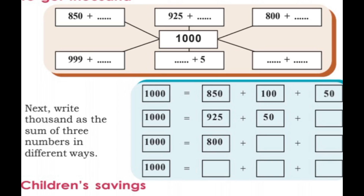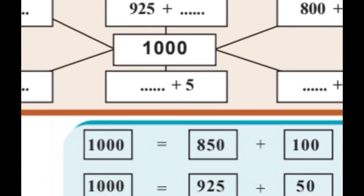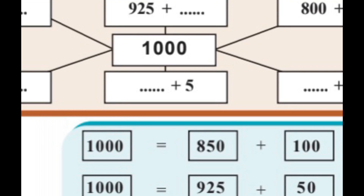So the answer is 150. Now, 925 plus blank gives 1,000. That is 1,000 minus 925. The answer is 75. Let us check it: 925 plus 75 equals 1,000. Correct.